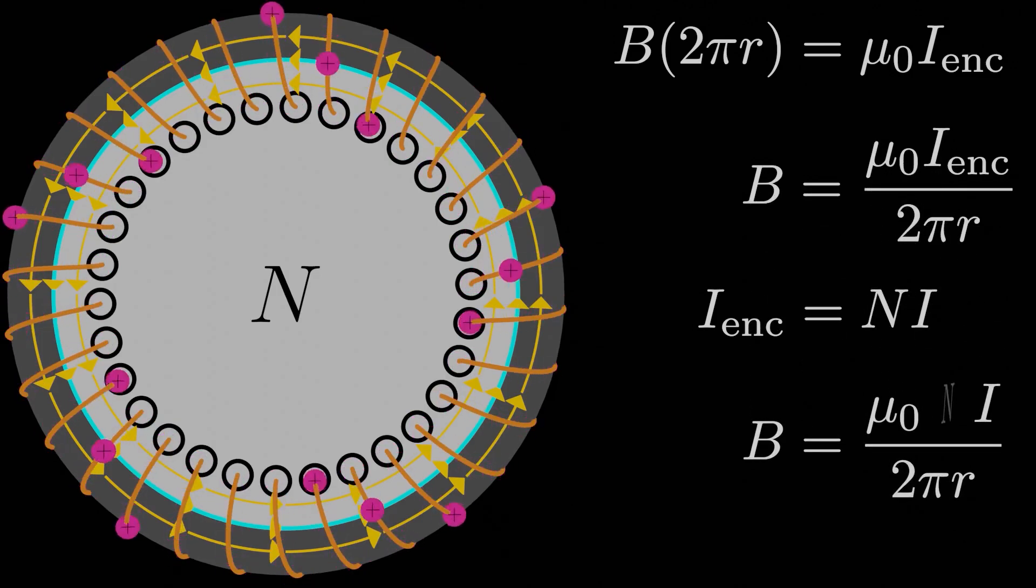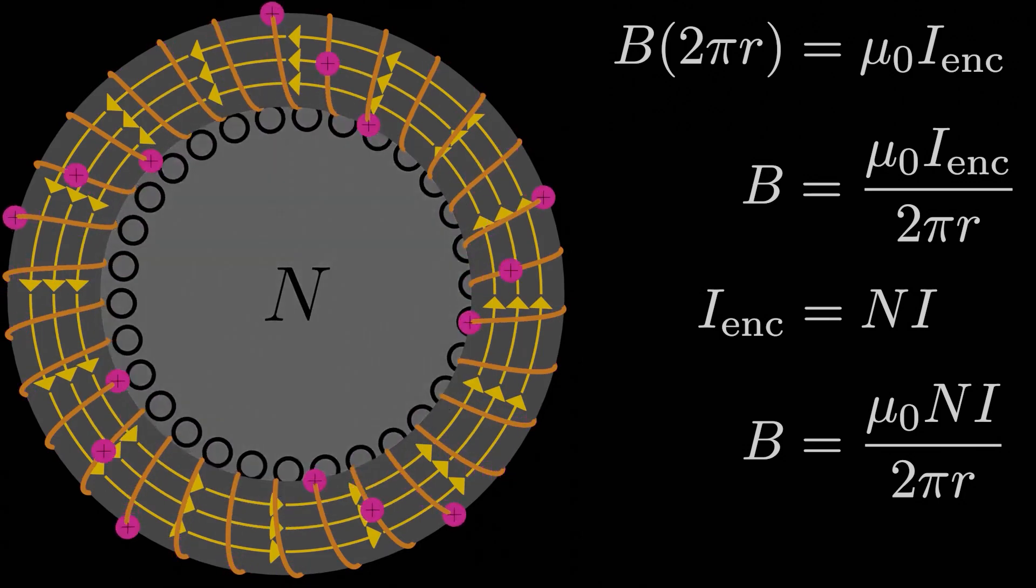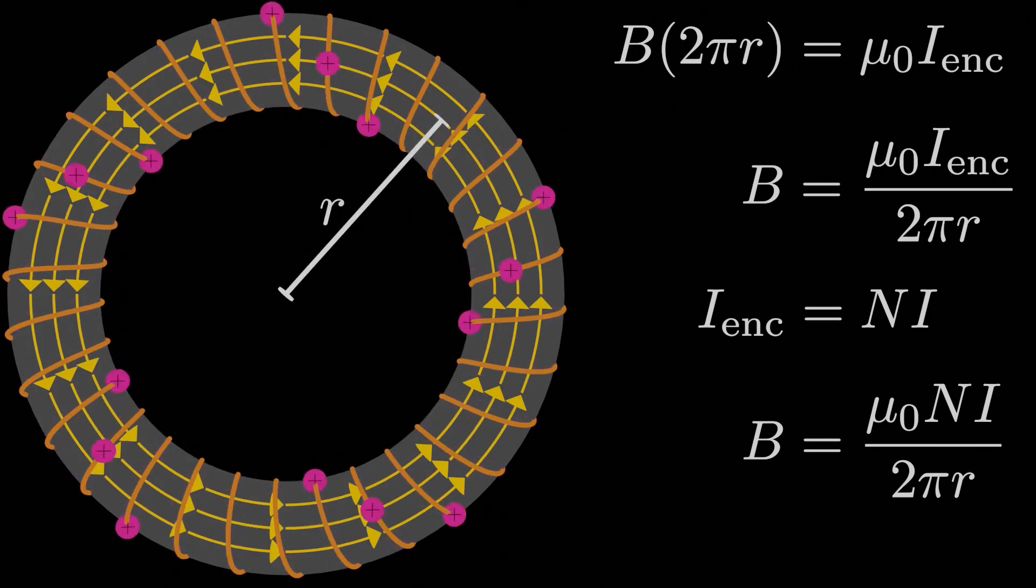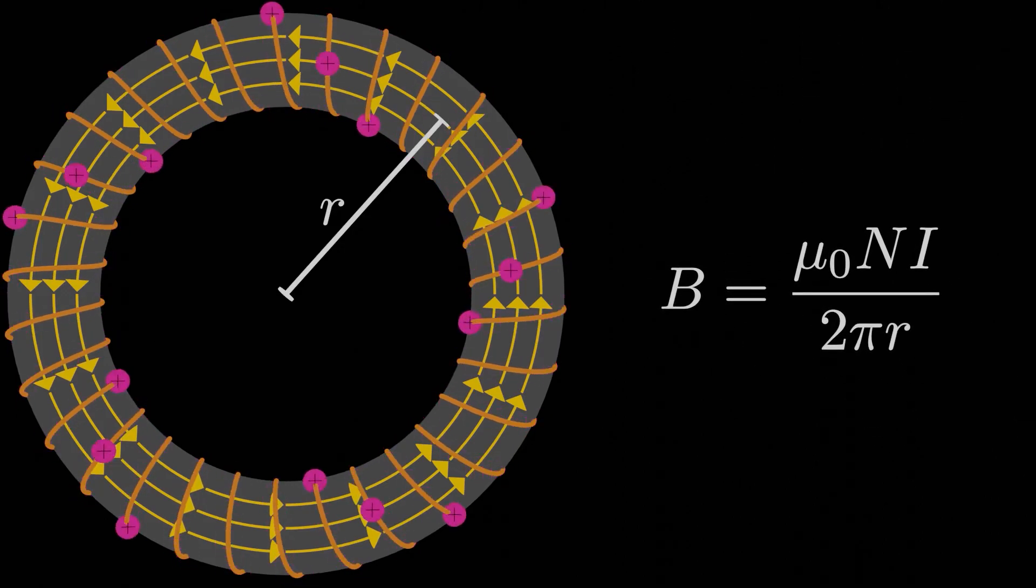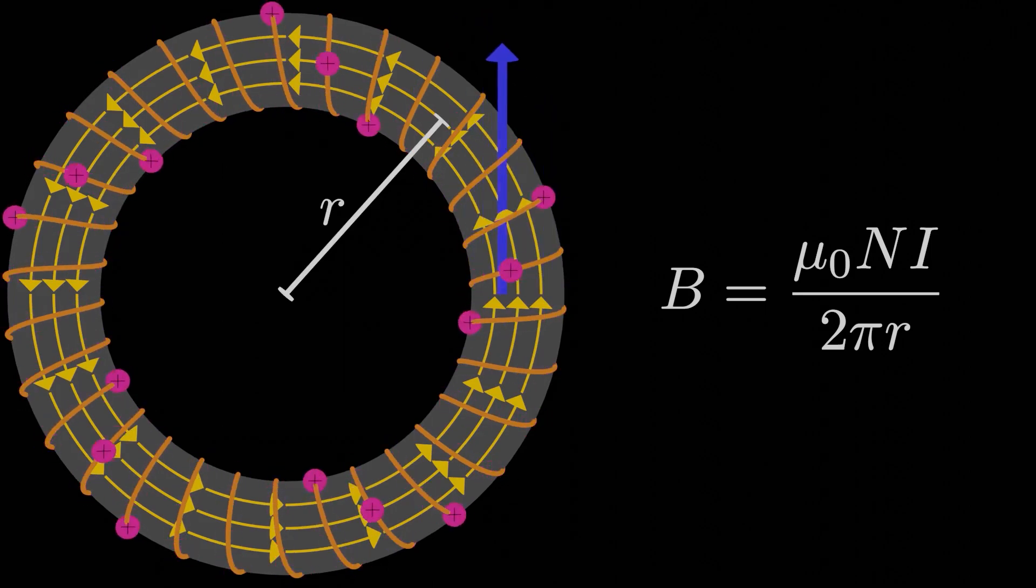And this then is our final answer for the magnetic field magnitude inside the toroid, μ₀ times capital N times I all over 2πr. Note how the field isn't constant in magnitude like it was in the case of a solenoid. There's a 1 over r dependence, so the magnetic field gets weaker as we move further and further away from the center of the toroid. And that's our last common scenario in which Ampere's law is really useful in calculating a magnetic field.